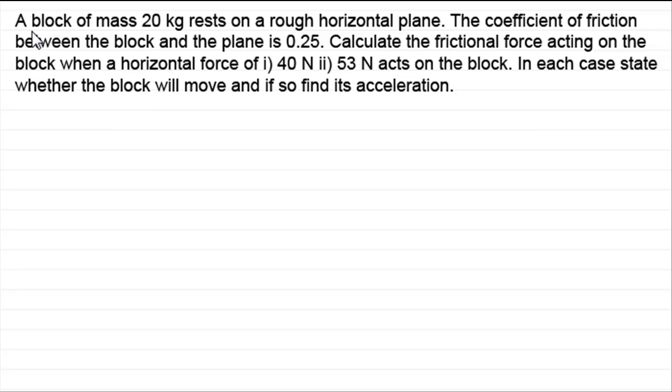What we've got here is a block of mass 20 kilograms rests on a rough horizontal plane. The coefficient of friction between the block and the plane is 0.25. Calculate the frictional force acting on the block when a horizontal force of 1, 40 newtons and 2, 53 newtons acts on the block. And in each case, state whether the block will move and if so, find its acceleration.